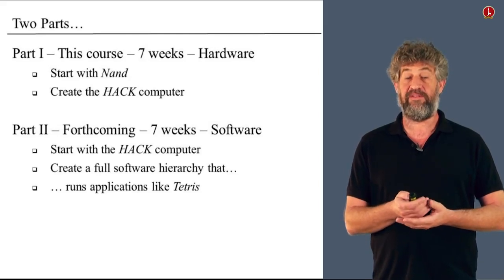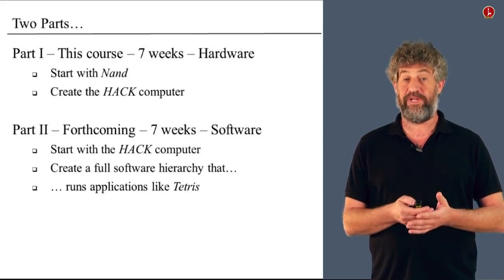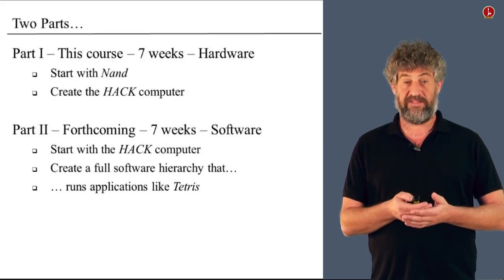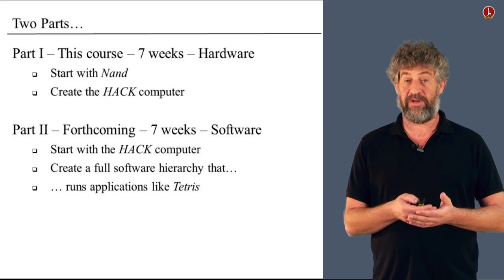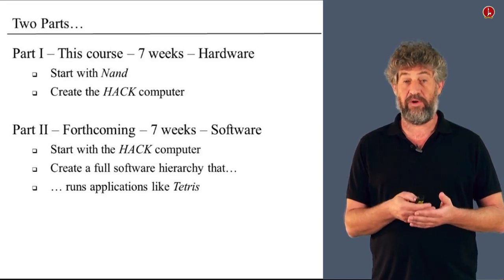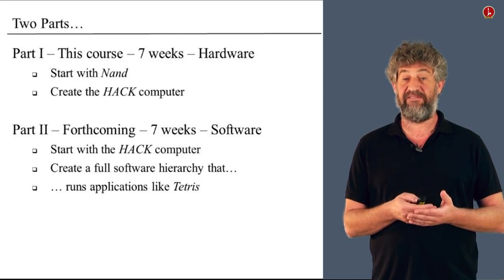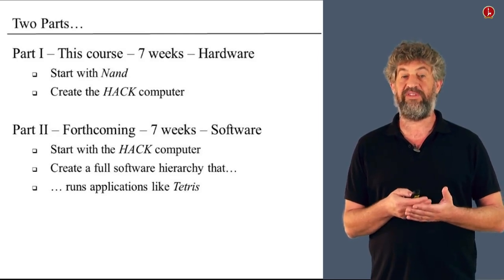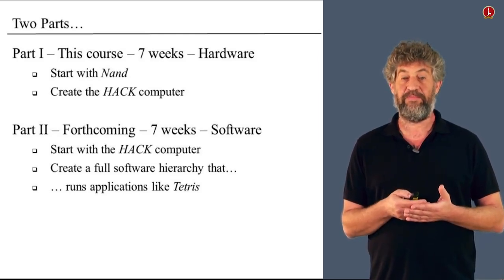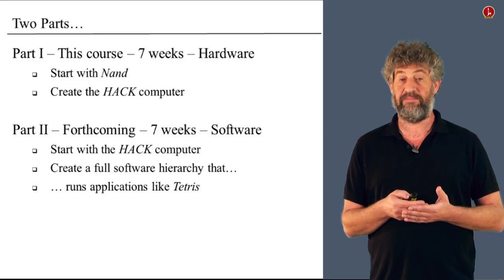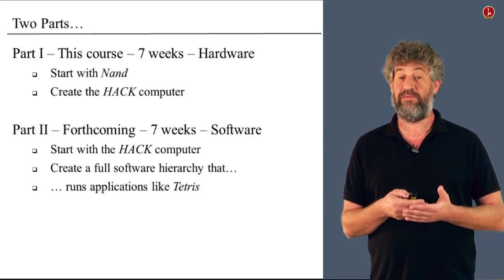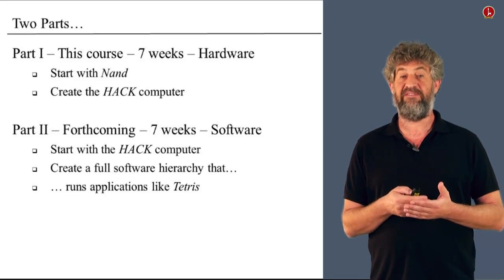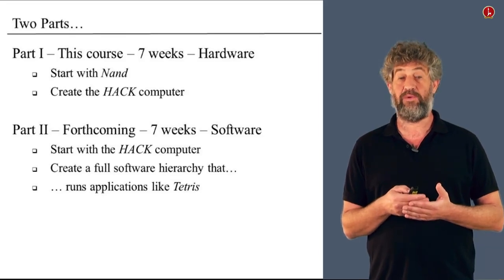All this accomplishment is going to happen in 14 weeks, in two parts. In the first part of the course, which is what we currently have on Coursera, which is going to last seven weeks, we're going to build the whole hardware platform of a computer. We're going to start with a very simple logic NAND gate and we're going to create a computer that can run assembly machine programs. And this is what you do in the first part of the course. Seven weeks, seven different steps, each step very simple, and you get a working hardware platform.